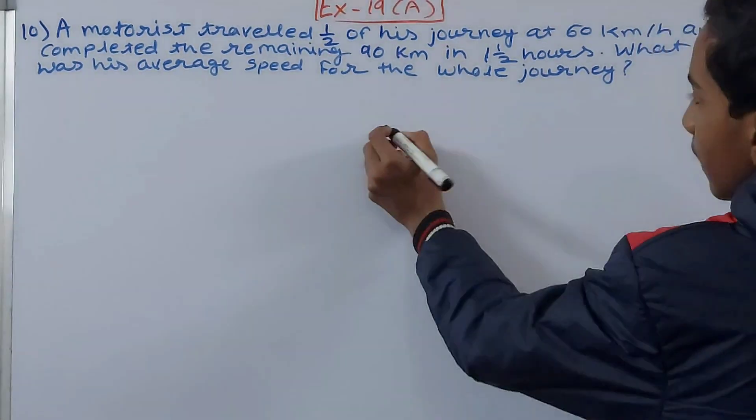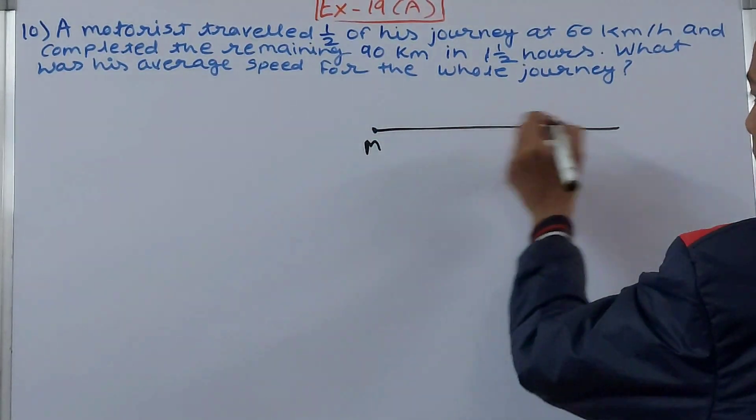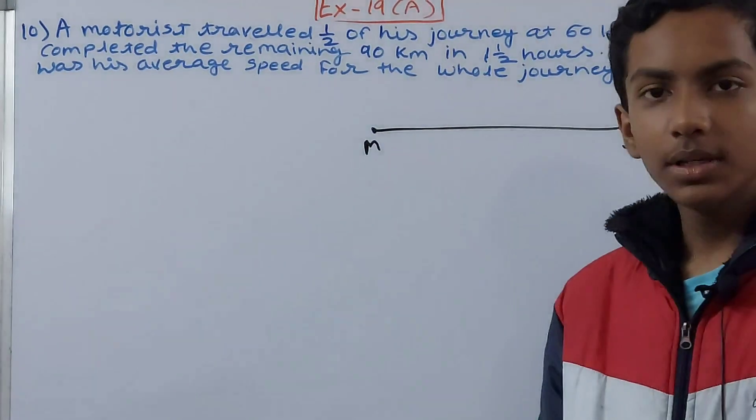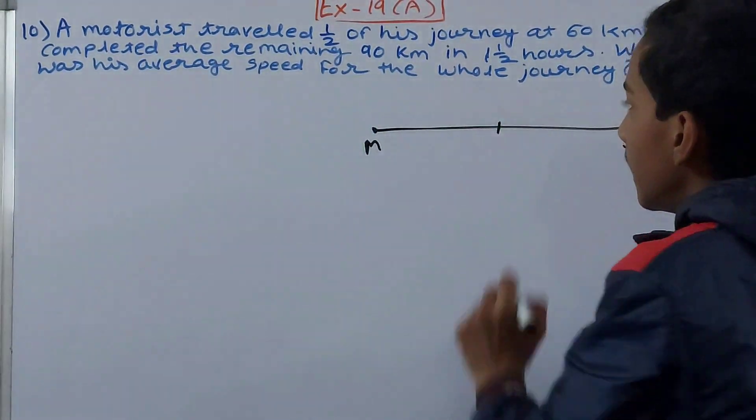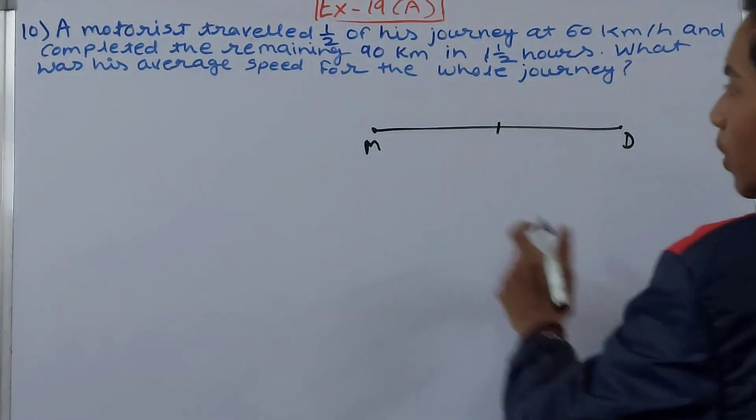Try to understand it this way: Suppose the motorist starts from here, let's say M for motorist, and his destination is here, D. His total journey is divided into two equal parts.